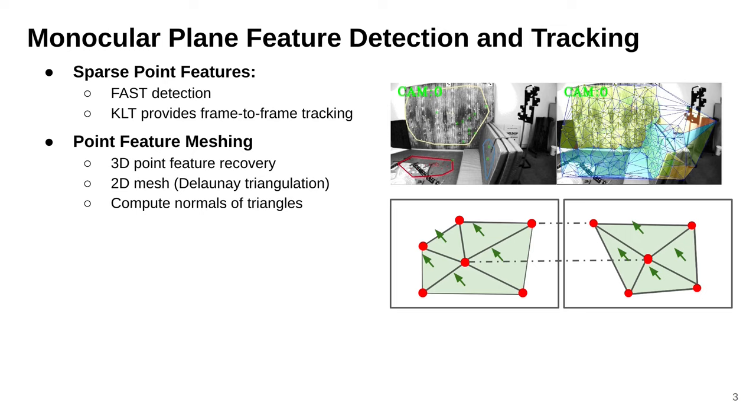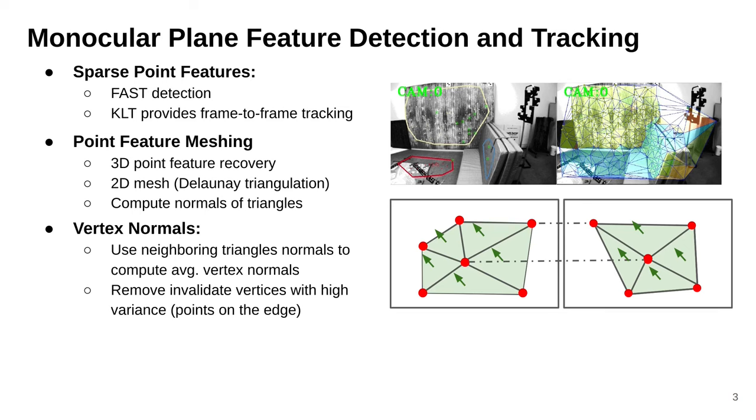In the top-right figure, we show an example of the Delaunay triangulation results, and we use colors to represent the value of the normal vectors. The ones that share similar colors indicate they are on the same plane. Next, we calculate the normal of each vertex using the connected triangles and reject any invalid vertex to improve robustness. Using the vertex normals, we can more precisely classify each individual point to a plane.